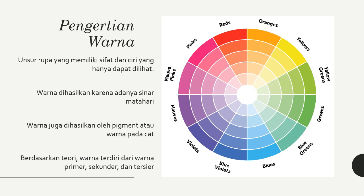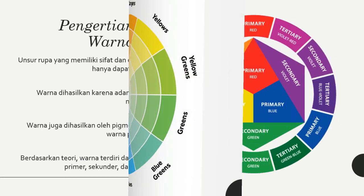Berdasarkan teoretik, warna sendiri terdapat tiga kelompok, yaitu warna primer yang terdiri atas merah, kuning, dan biru; warna sekunder yaitu hijau, oranye, dan ungu; serta warna tersier yang dibuat atas pencampuran warna primer dan warna sekunder.